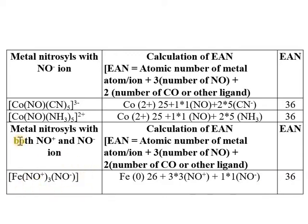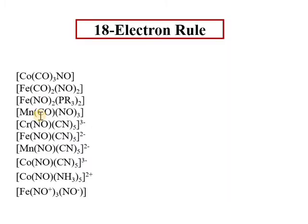Now applying the 18-electron rule: cobalt has 9 valence electrons (3d7, 4s2). With 3 carbonyls donating 6 electrons and 1 NO+ donating 3 electrons, the total equals 18 — it follows the 18-electron rule. For iron, which has 8 valence electrons, 2 CO provide 4 electrons and 2 NO provide 6 electrons, again giving 18 electrons total.